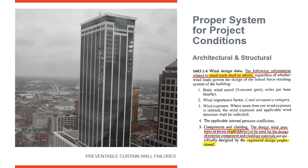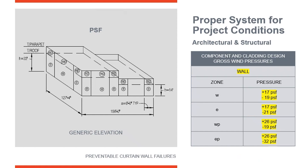The wind loads are called out in a components and cladding chart located in the general information section of the structural drawings. In this example chart, it's broken into zones: W, E, WP, and EP — corresponding to areas on the building elevation. Zone W is in the center, E at the corner, and EP at the corner going up to the roof line. For example, in zone W the positive wind load is 17 PSF, but in zone EP the negative wind load is 32 PSF — showing how wind load changes across the building.